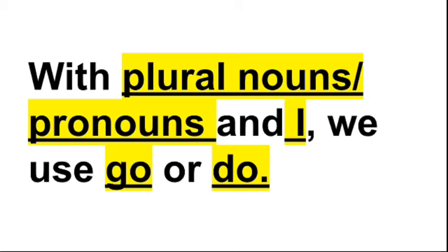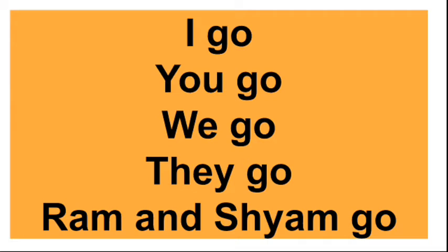Although I is a singular pronoun, we still use go or do with it — it's a special case, so you need to remember it. Like: I go, you go, we go, they go, Ram and Shyam go. Similarly: I do, you do, we do, they do, and Ram and Shyam do.